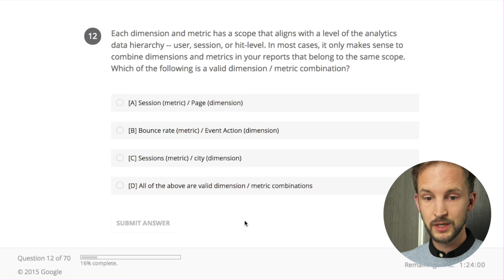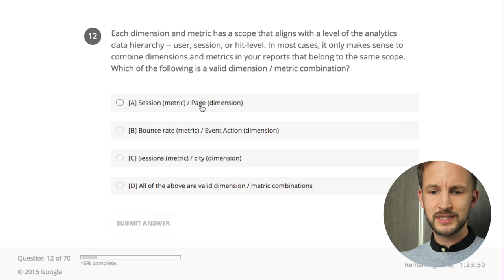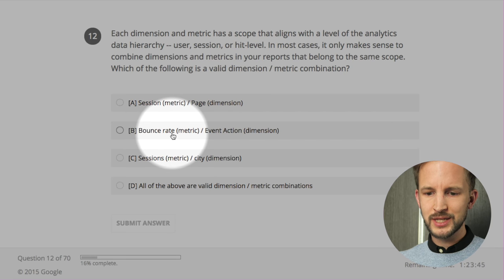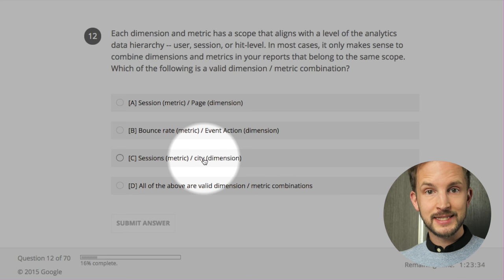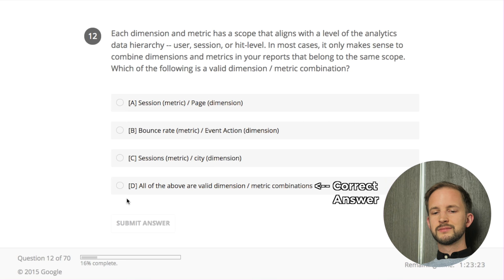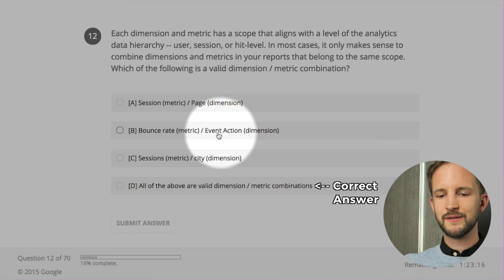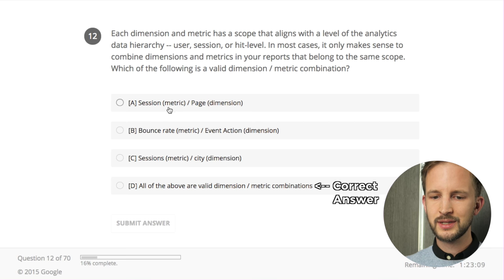Which of the following is a valid dimension-metric combination? Session and page - the page would be the landing page, it's valid but I wouldn't recommend it. Bounce rate and event - no, because bounce rate suggests you didn't have an event. Sessions and city - yes, they come together because in a session you are in the same city. All of the above are valid - I wouldn't put bounce rate with event action unless it's a non-interaction event. I'll go for C.